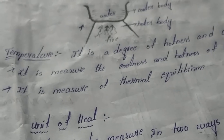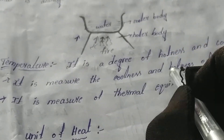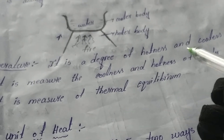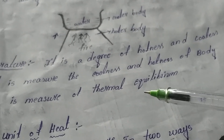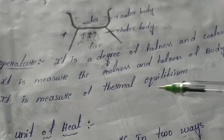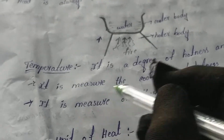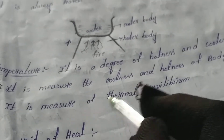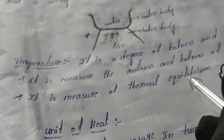Let us see temperature. Temperature is nothing but the degree of hotness and coolness of a body. When heat enters into a body, we feel warmth. Temperature measures the hotness and coolness of the body, and it is related to thermal equilibrium.